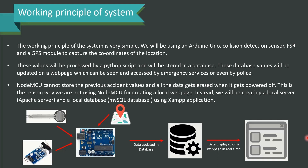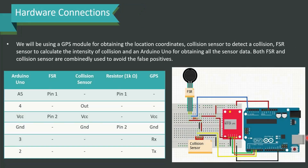NodeMCU cannot store previous accident values and all data gets erased when powered off — this is why we have not chosen NodeMCU. Instead, we will be creating a local server using Apache and a local database using MySQL via the XAMPP application. The complete flow diagram is presented: we get the sensor data, update it in the database, and display the data in real time on the webpage.